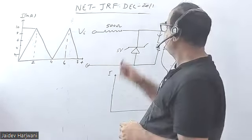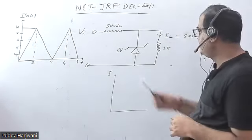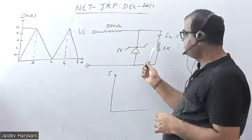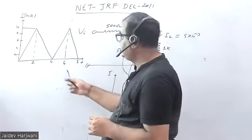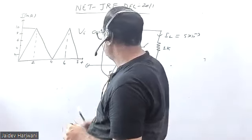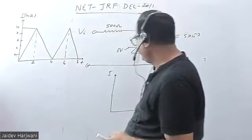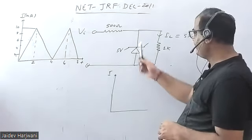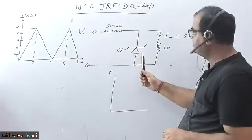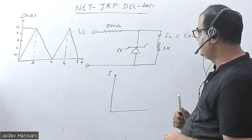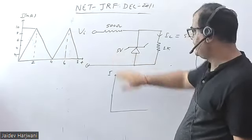Hello students, let us see this problem from NET JRF in December 2011. In this question, they have given a Zener diode based regulating circuit, and they are applying an input waveform to this Zener diode. The current is varying with time and they are asking: what is the waveform — what is the form of current passing through this diode? The breakdown voltage is given as 5 volts.